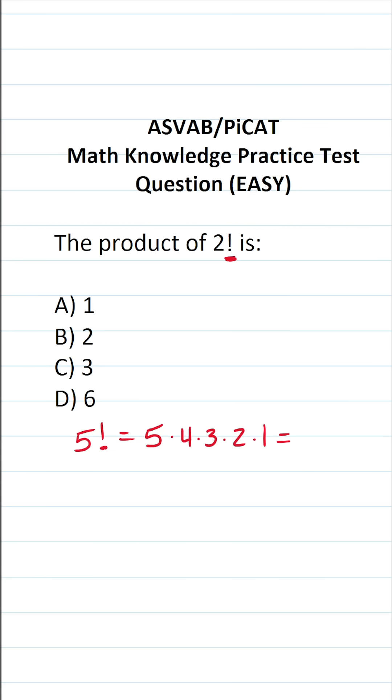And what is the product of 5 factorial? Well, it's 5 times 4, which is 20. 20 times 3 is 60. 60 times 2 is 120. 120 times 1 is 120. So the product of 5 factorial is going to be 120.